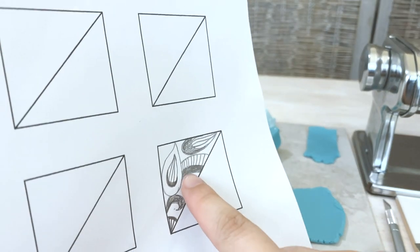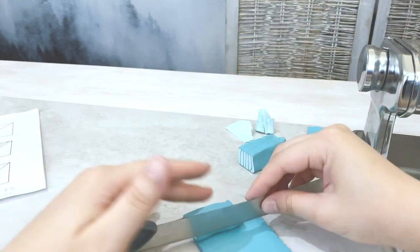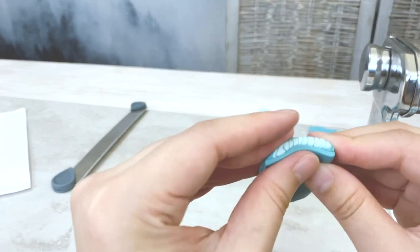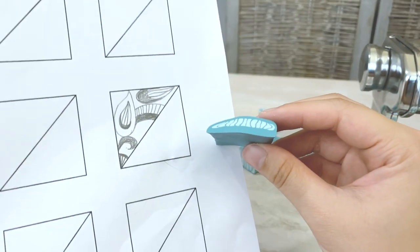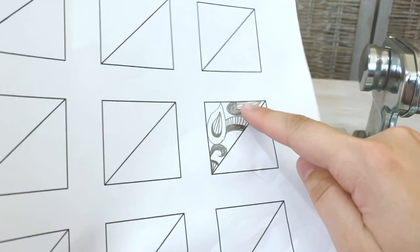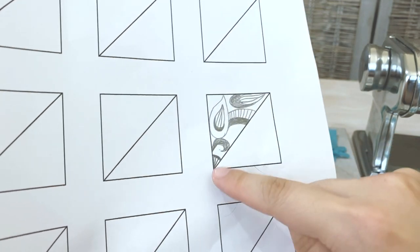I also went ahead and added a border around that and adding a thicker layer of clay just below the component. Now we got our first shape! And next we are going to work on these other 3 almond shapes.